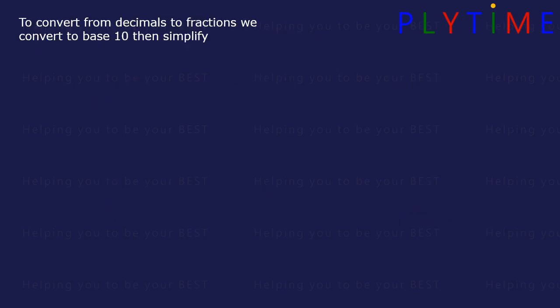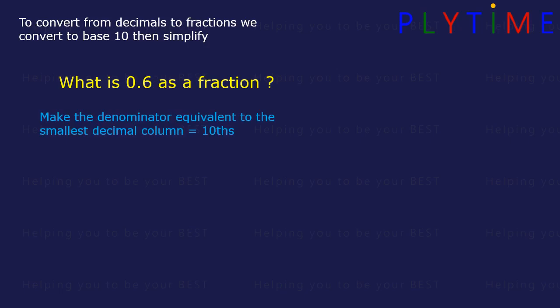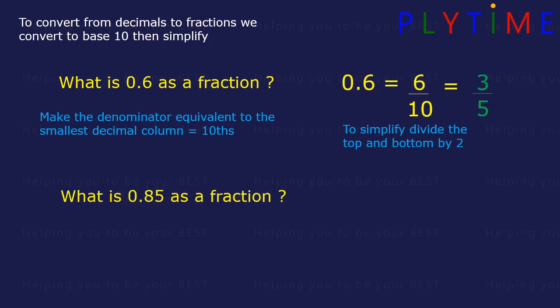To convert from decimals to fractions, we convert to base 10, then simplify. What's 0.6 as a fraction? Make the denominator equivalent to the smallest decimal column, in this case, tenths. So 0.6 equals 6 over 10. To simplify, divide the top and bottom both by 2. So 10 divided by 2 is 5, and 6 divided by 2 is 3. The fraction is 3 fifths.